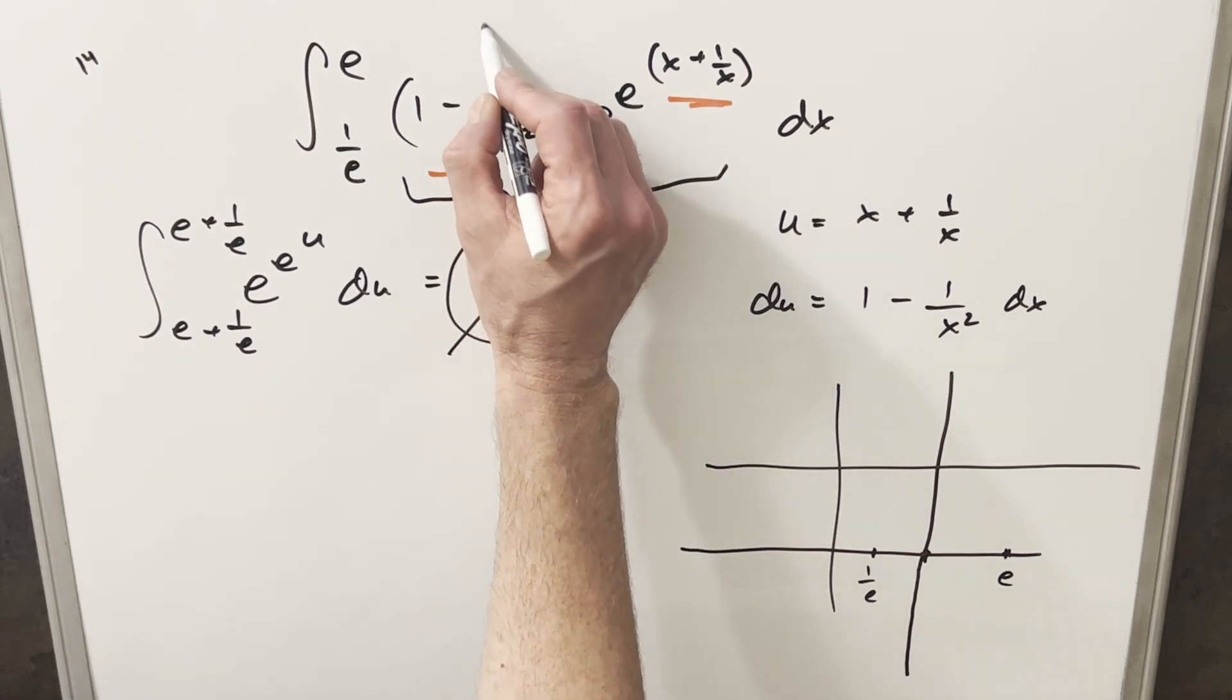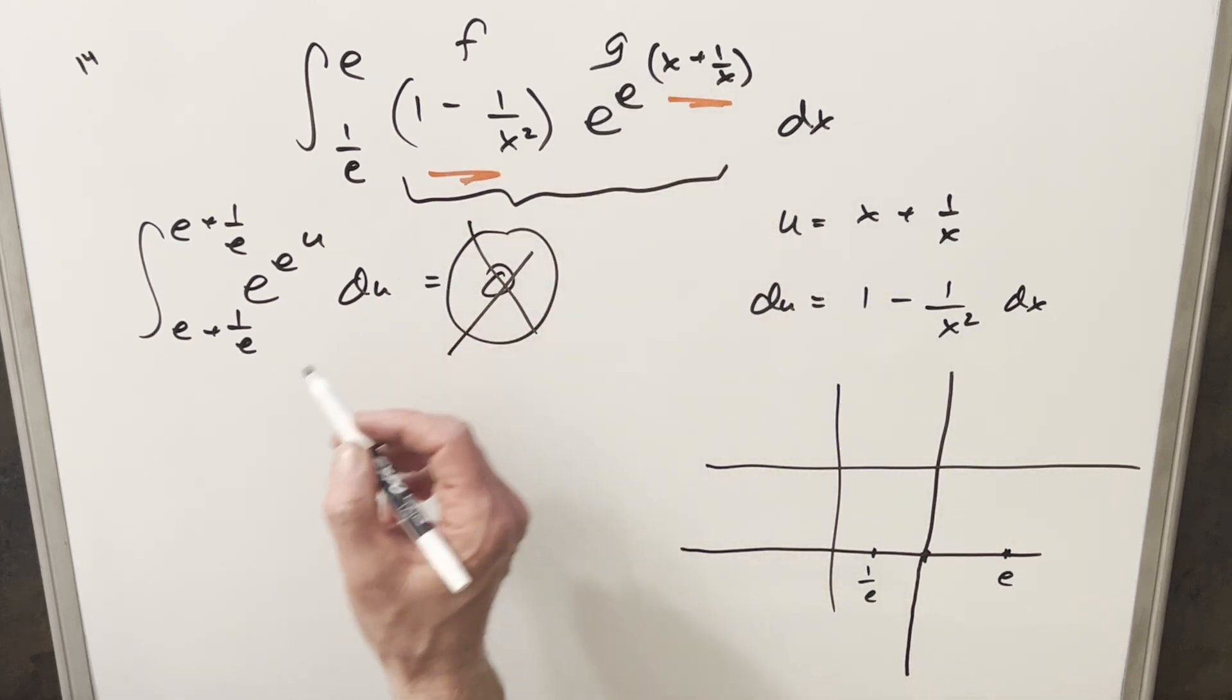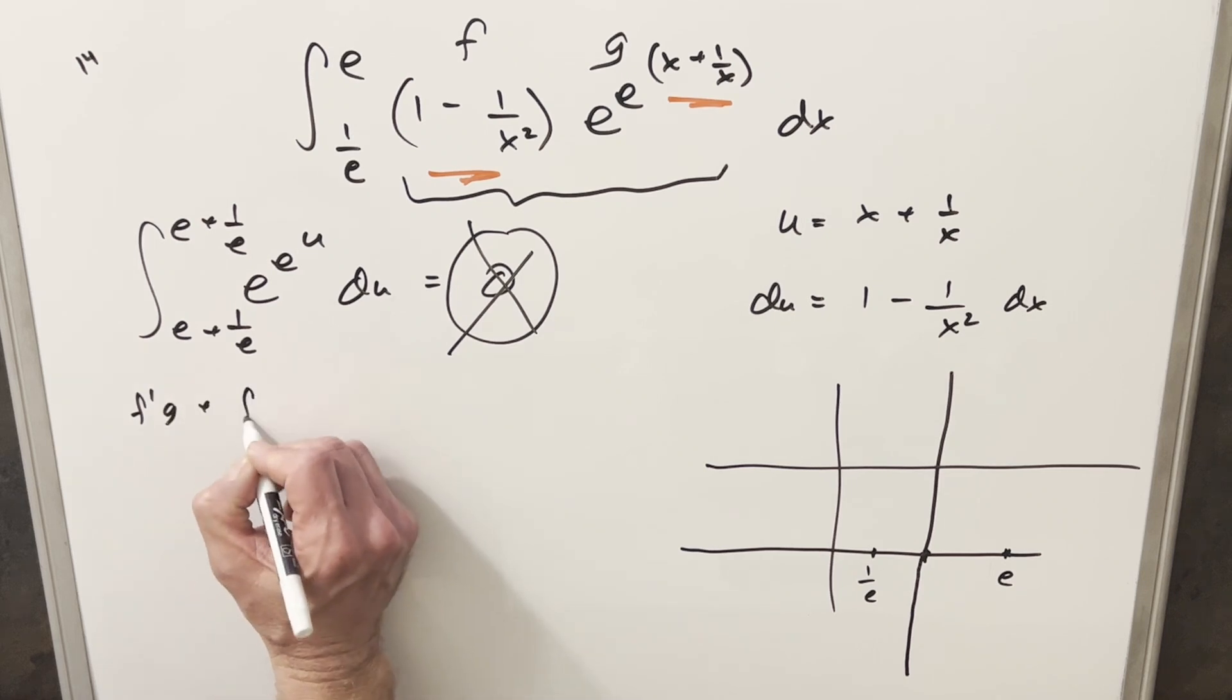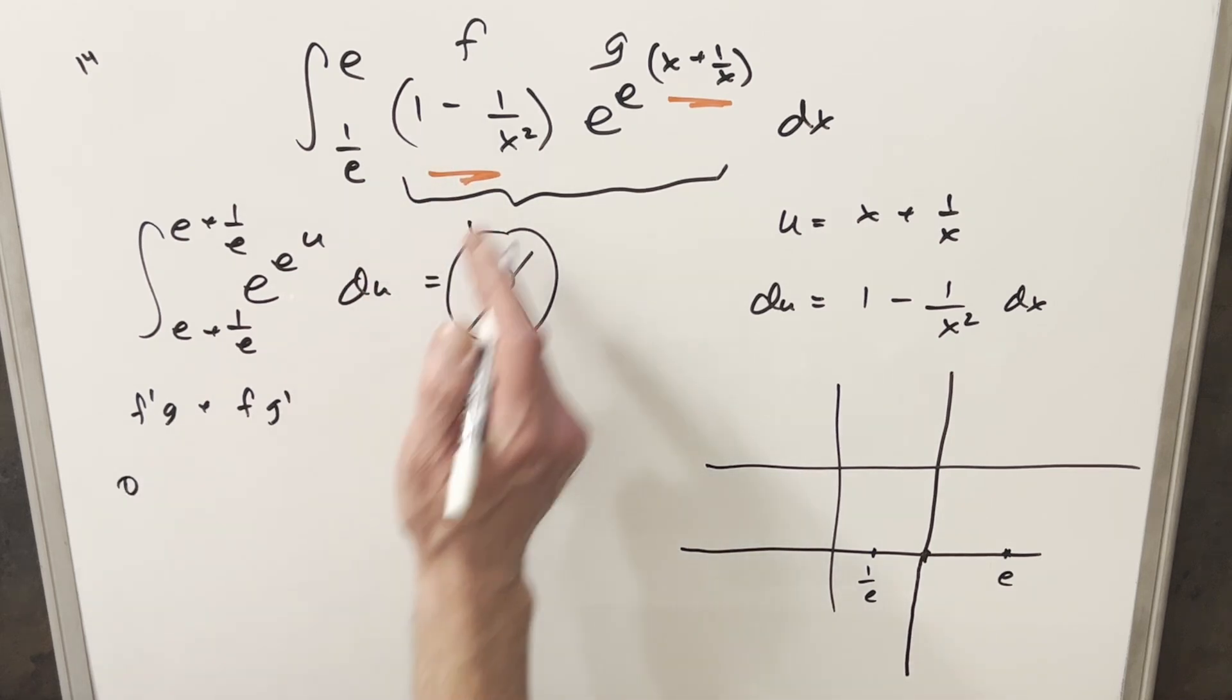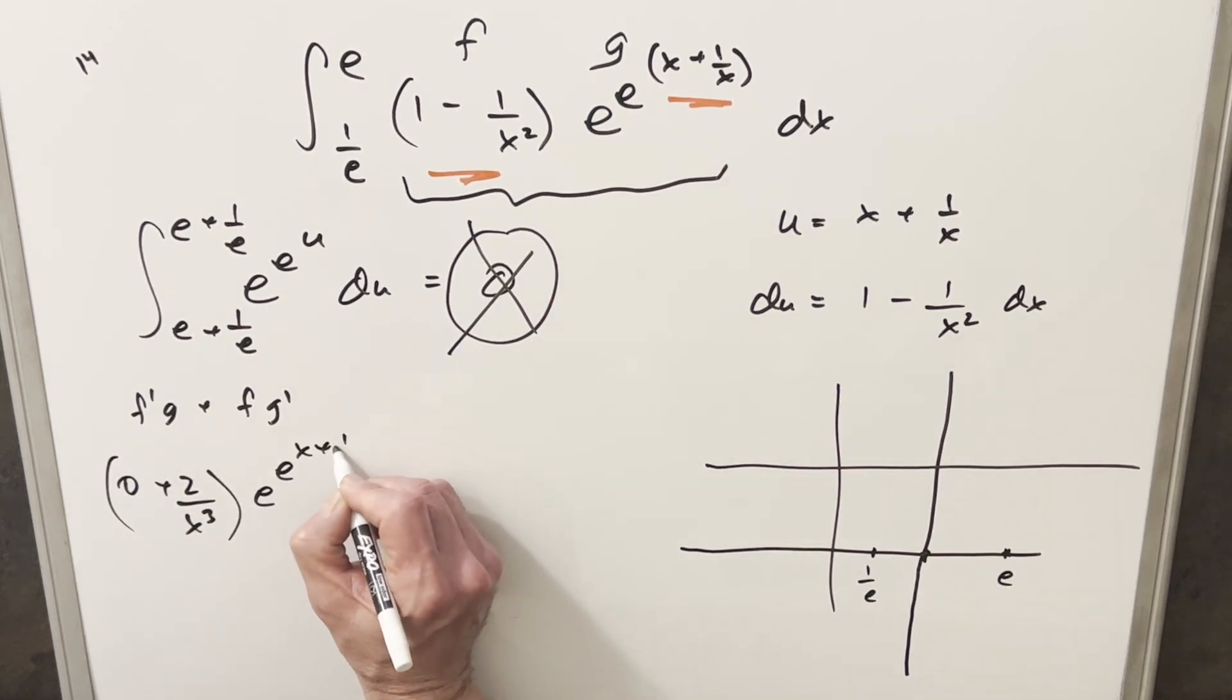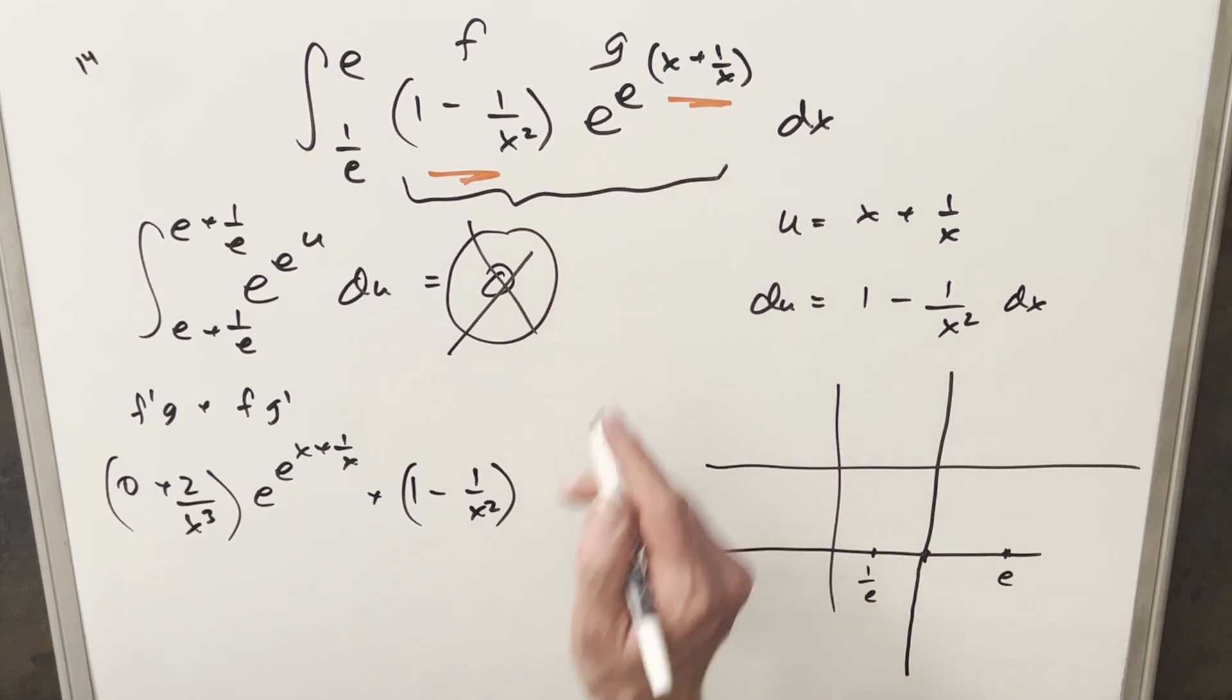Okay, so let's take the derivative of this and we'll use the product rule. I'll make this first piece my f and this piece my g. So for the product rule, we just want to find f prime g plus f g prime. So for the first piece f prime, that's just going to be derivative of one is zero. Derivative of this is going to be plus two over x cubed. And then we'll just copy down this other part. And then plus, we'll just want our f: one minus one over x squared.